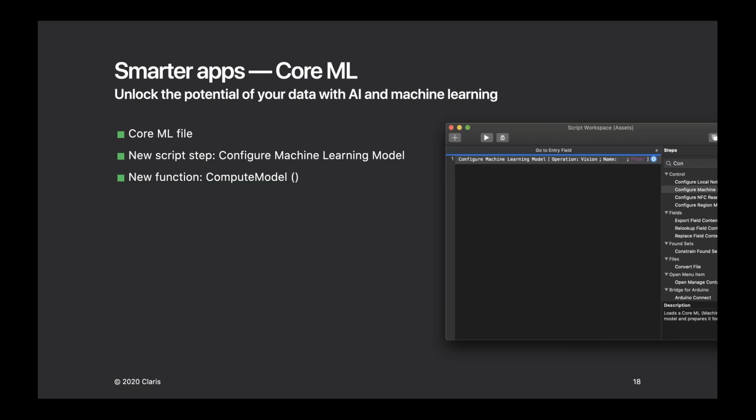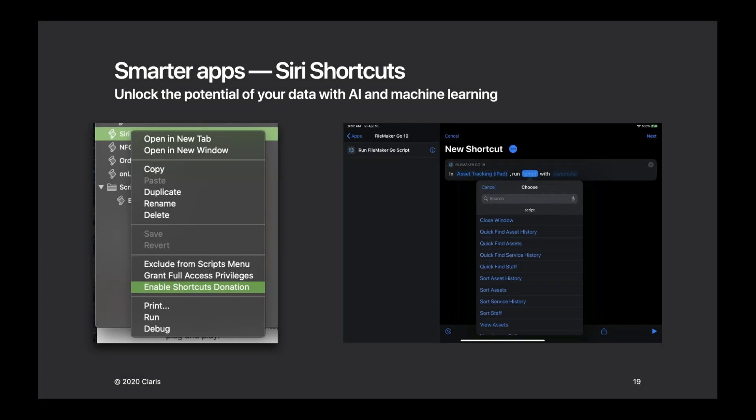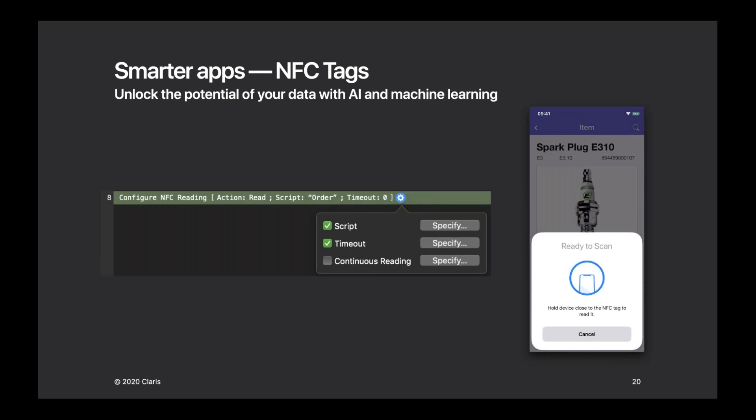Continuing with smarter apps, we're now bringing Siri Shortcuts support to Claris FileMaker 19. You'll be able to use your voice to run automations like searching for records, updating inventory, or starting a process. To enable this, go to the script workspace, right-click on a script, and choose to donate it to Shortcuts. When users open their Shortcuts app on iOS they will see FileMaker Go along with the donated scripts. Users can then create a larger shortcut experience picking from the scripts you've provided, and the task can be performed with just a tap or by asking Siri.